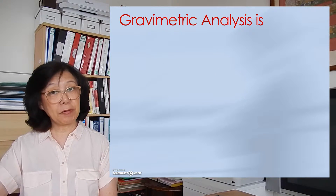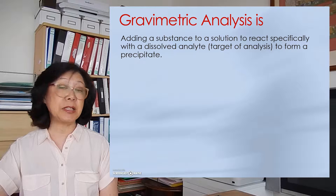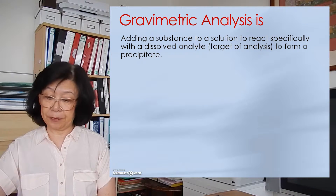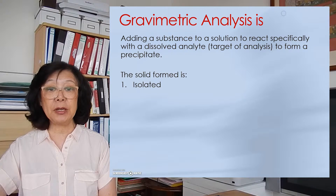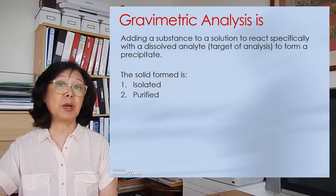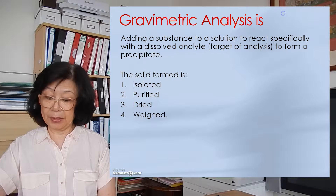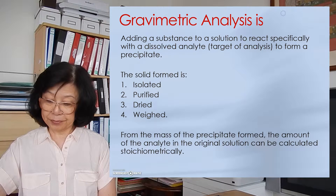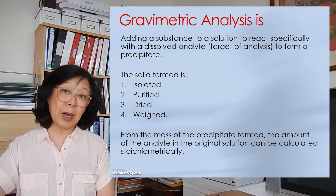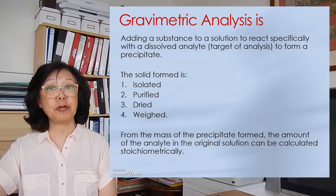So what is gravimetric analysis? It is adding a substance to a solution to react specifically with a dissolved analyte to form a precipitate. The precipitate formed will then be isolated by filtration, purified by being washed with more water, dried in the oven, and re-massed at the end. From the mass of the precipitate collected, we can then calculate backward using stoichiometric mole ratios to find the mass of the analyte in the original mixture.